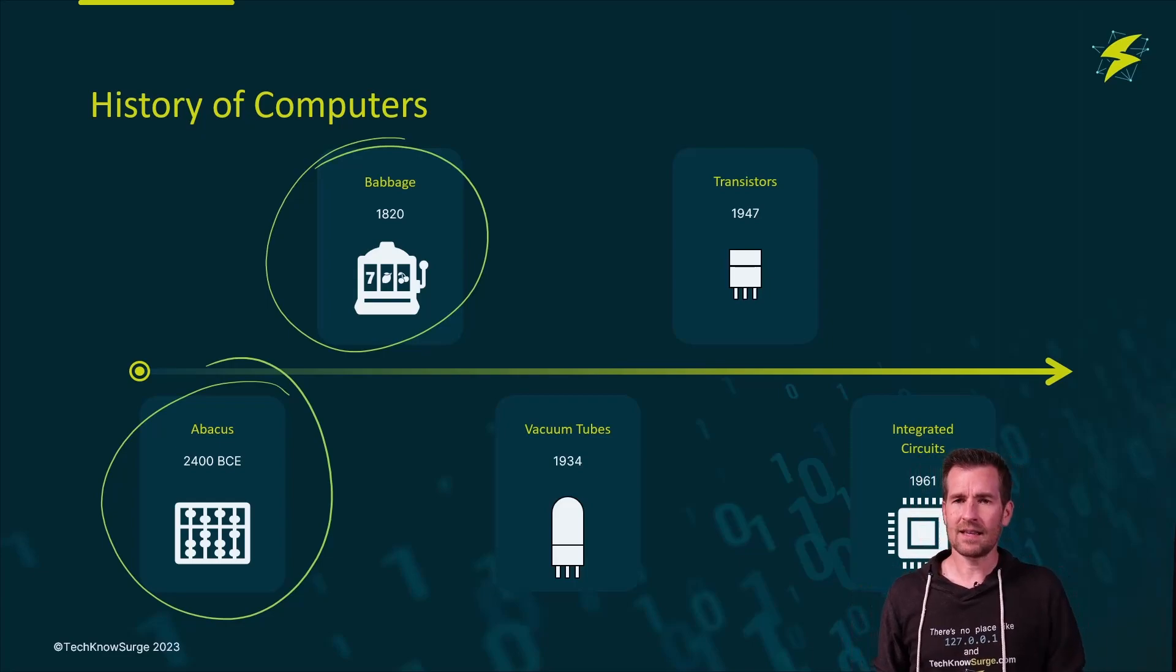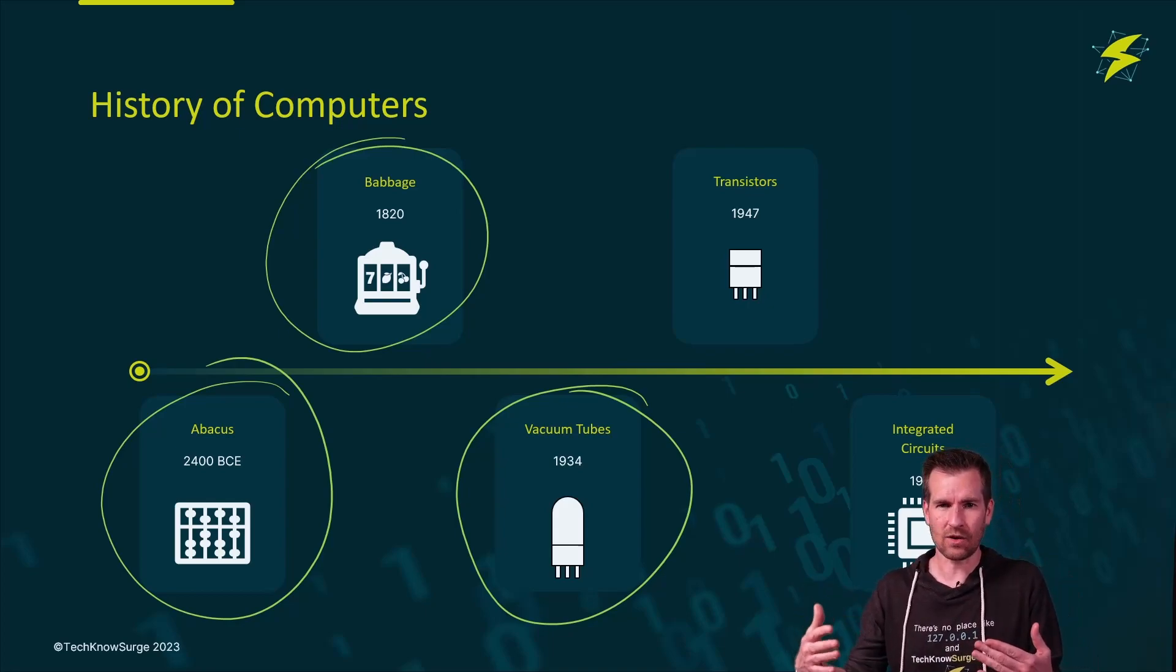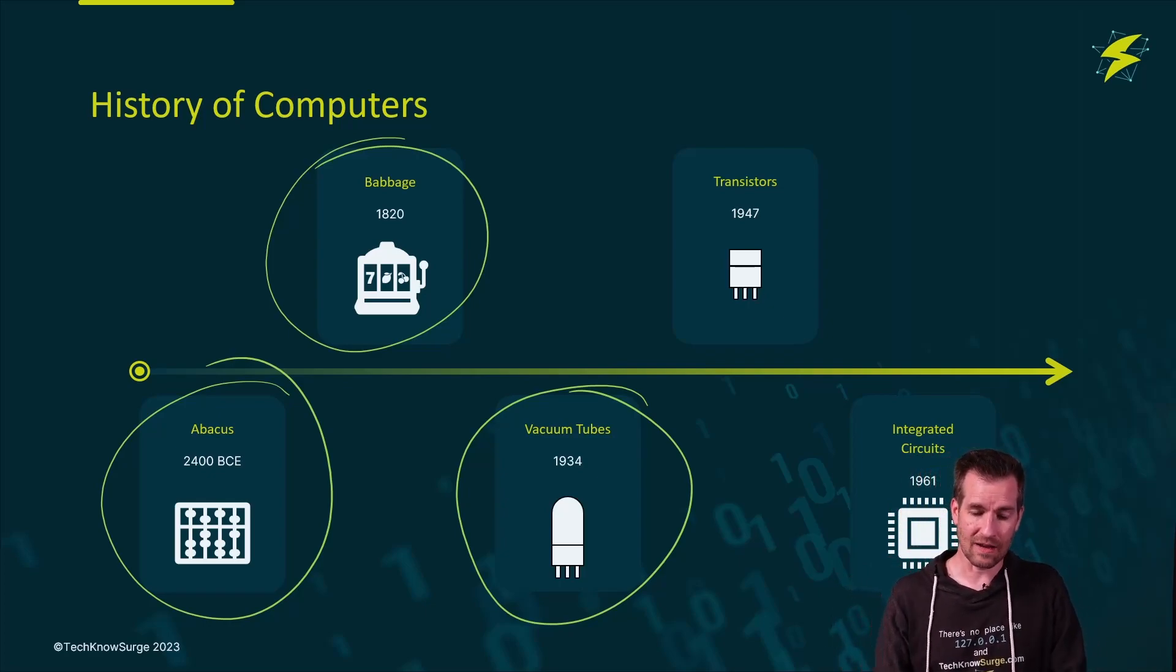Then we started coming up with things like vacuum tubes. So 1934 the idea of using vacuum tubes came about where now rather than a mechanical process to do the calculation, perhaps we could use electricity and create faster compute power with this. And so they started out using vacuum tubes. We don't need to necessarily know all the ins and outs of how these vacuum tubes work, but at some point in time they transitioned from using vacuum tubes to using transistors.